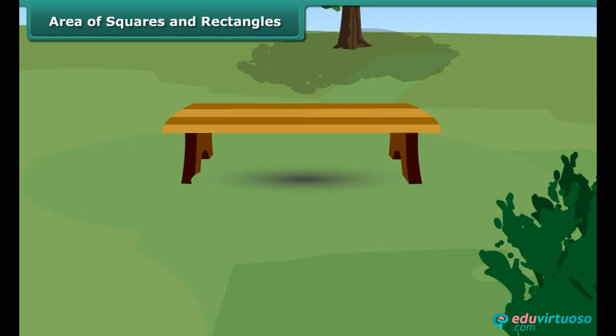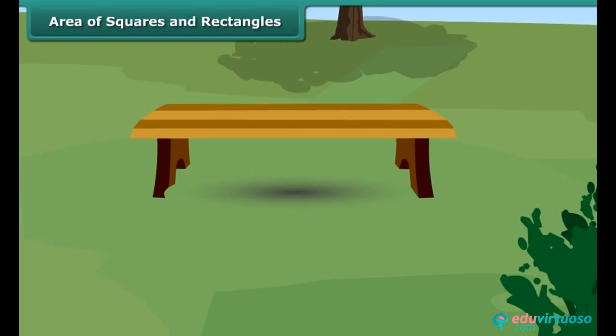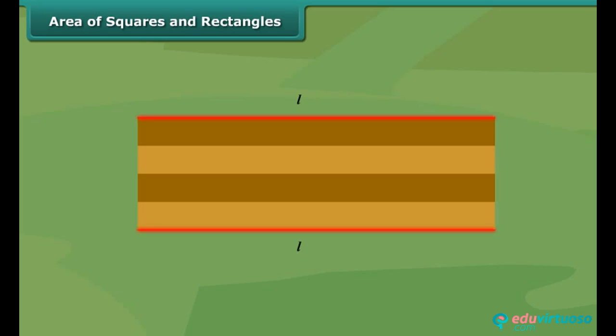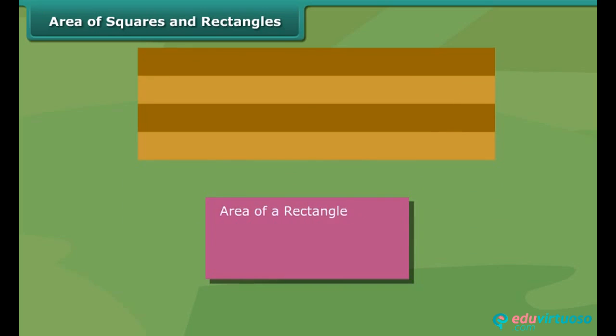You have noticed the shape of the bench in the park. It is in the shape of a rectangle on the sitting top portion. Can you find the area of the top of the bench? Yes. If you have the measures of the length and breadth of the rectangle, we can find the area. The area of a rectangle is the product of its length and breadth.